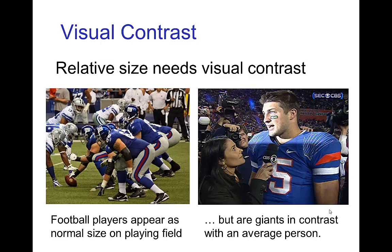In order for this comparison of relative size to be successful, you need a visual contrast. For example, if you watch a football game, you might not be that impressed about the size of the players when you're watching on TV and you see them on the field. The reason they don't seem large is because they are all large, so you don't have a visual contrast. But when one of those players is standing in a crowd of ordinary-sized people, then you have visual contrast and you notice their large size.